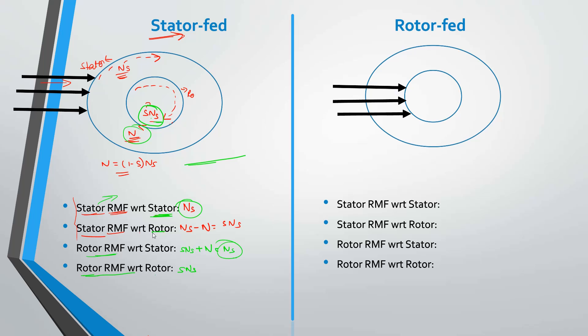So as you can see, with respect to stator the stator RMF is NS and rotor RMF is also NS. Similarly, with respect to rotor both the RMFs are equal. Now moving on to rotor fed.